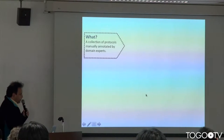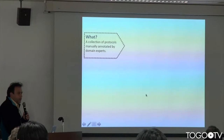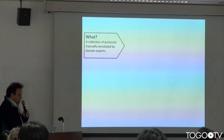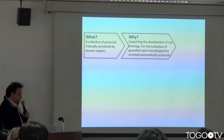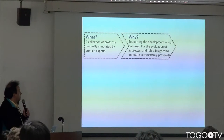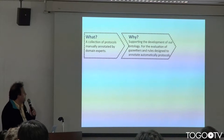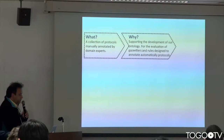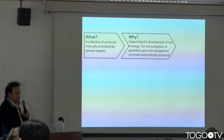Basically what we are doing is that we are manually annotating a collection of protocols. We want to support the development of an ontology for the discovery of instruments, regions, and samples in experimental protocols, and we also want to validate the GRAS adherence rules that we have put together so that we can support the automatic annotation of these kind of documents.